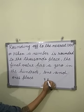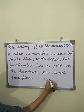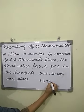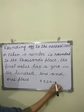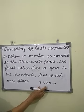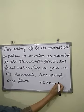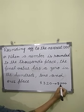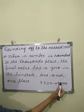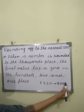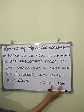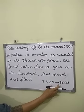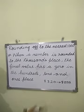For example, we have the number 8,320. When we round off to the nearest 1000, it will have zeros in the 100s place, 10s place, and 1s place. Let's learn how we will round off any number to the nearest 1000.